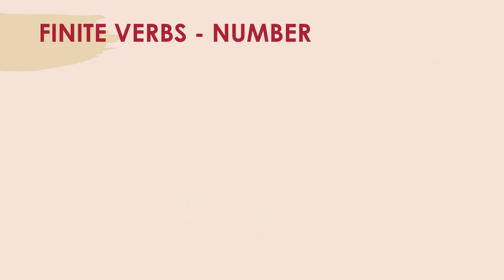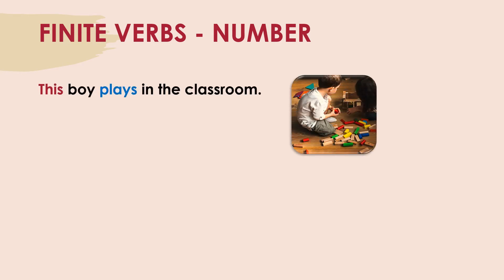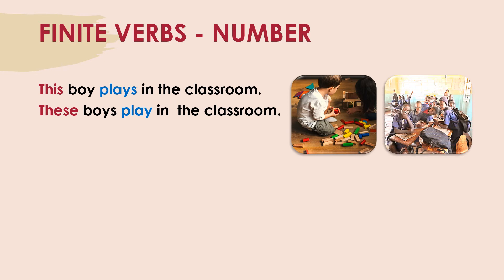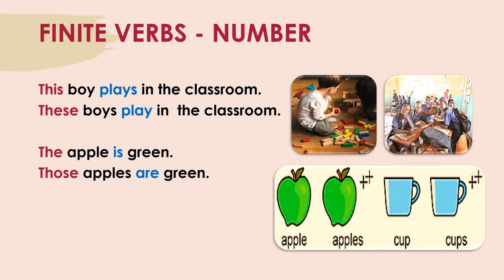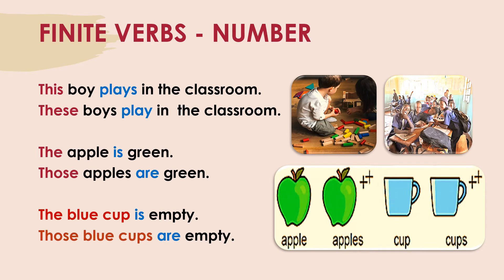Finite verbs also change according to number, that is singular or plural. For example, 'this boy plays' — in the plural, 'these boys play in the classroom.' So you see the finite verb changing according to singular and plural. One more example: the apple is green; many apples are green. And the blue cup is empty — one cup — whereas those blue cups are empty. Again, the verb changes according to number: singular and plural.